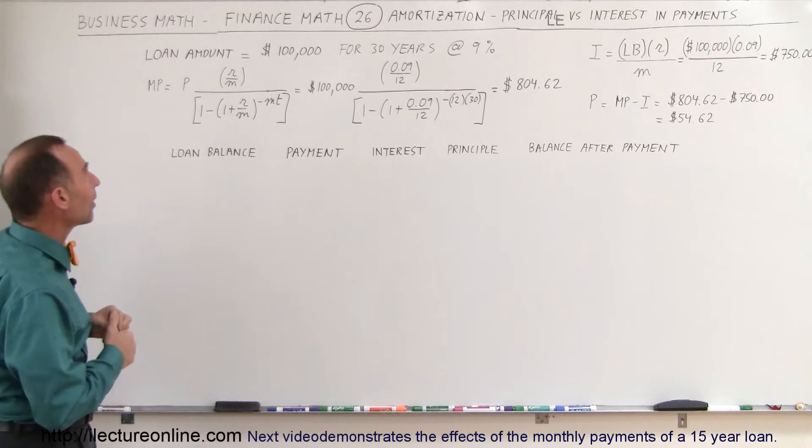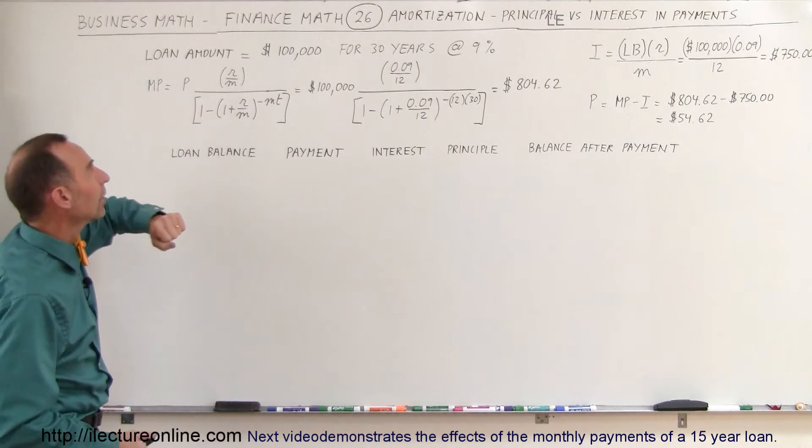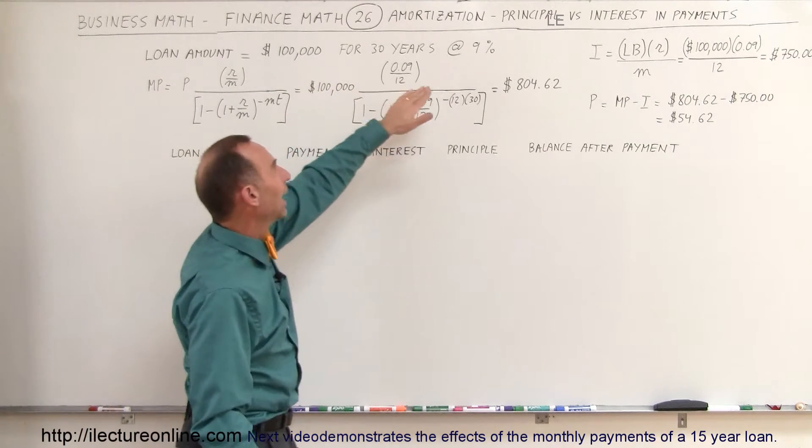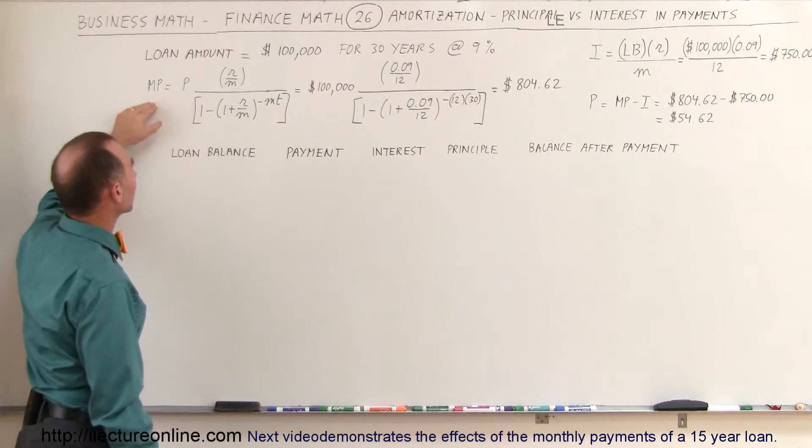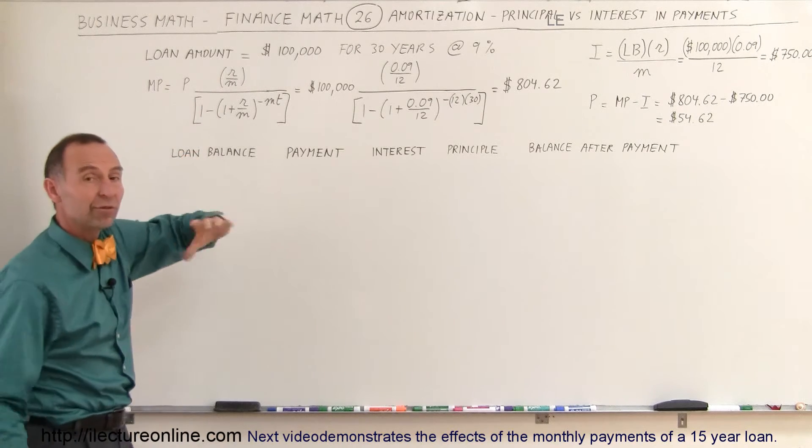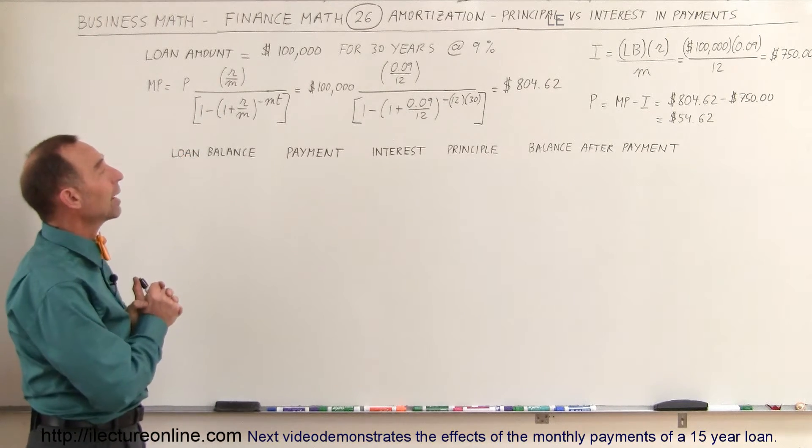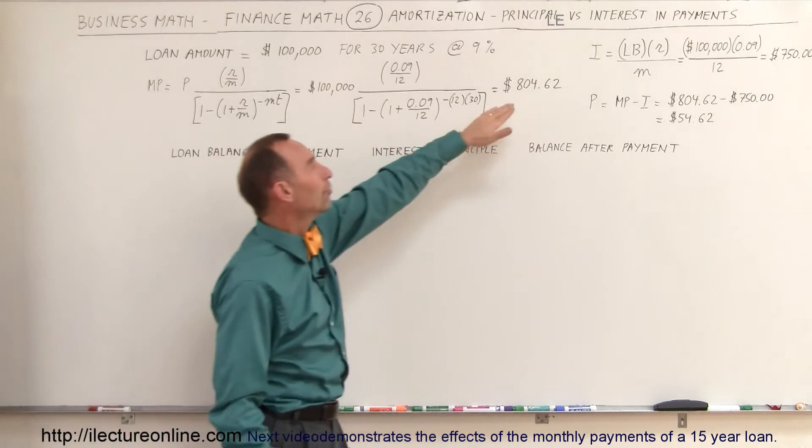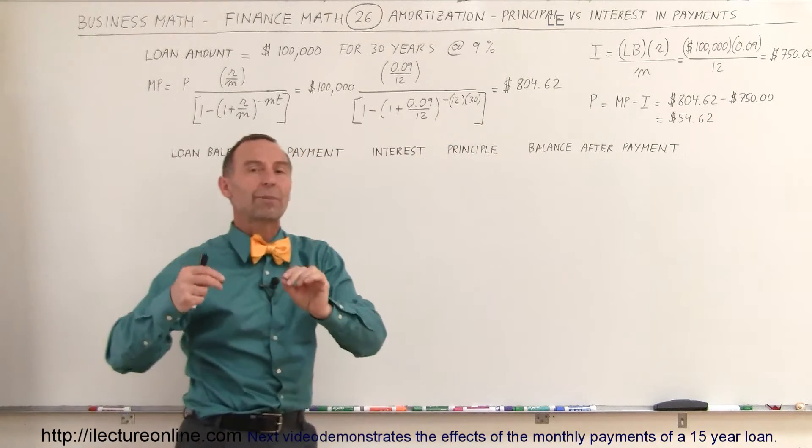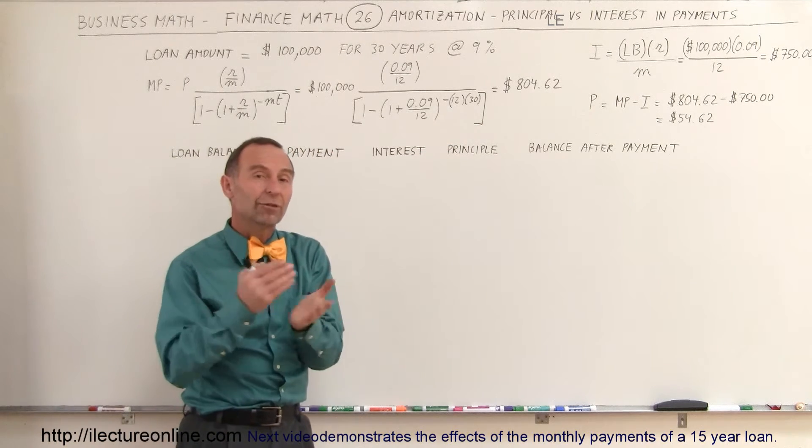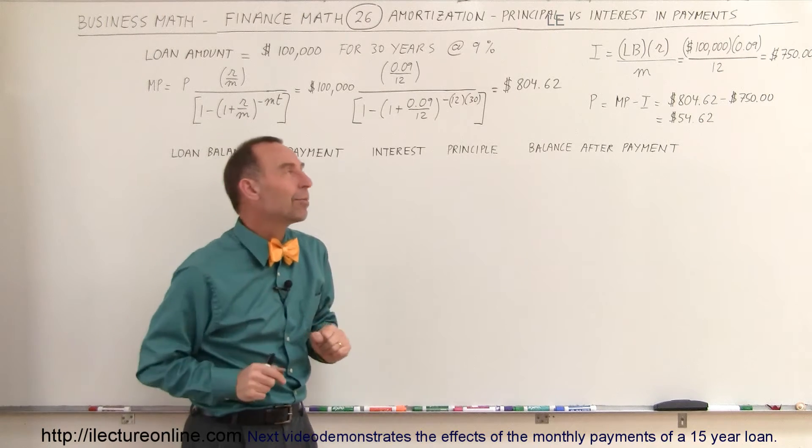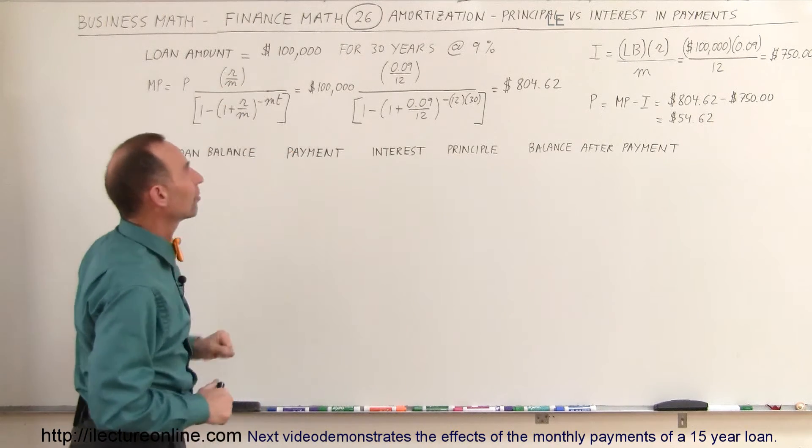But let's take an example. Let's say that we're borrowing $100,000 for 30 years at 9% interest. And so we can calculate the monthly payments using this equation. You should be familiar with the equation by now. And so that ends up being $804.62 that we have to pay back to the bank every month for the next 30 years, 360 payments in order to pay off the $100,000 loan.